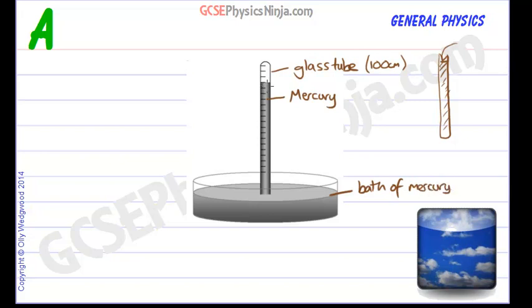That column of mercury inside the tube will fall due to the weight of the mercury. So the weight of the mercury pulls the column down and that means inside here is created a vacuum.